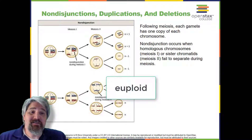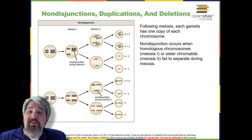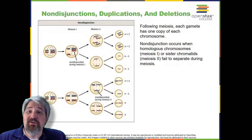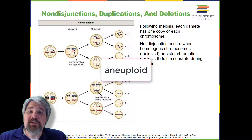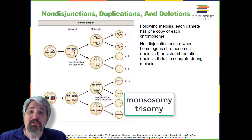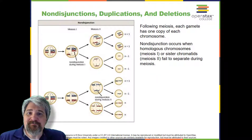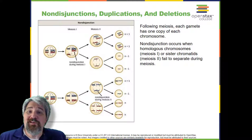An individual with the appropriate number of chromosomes for their species is called euploid. In humans, euploidy corresponds to 22 pairs of autosomes and 1 pair of sex chromosomes. An individual with an error in chromosome number is described as aneuploid, a term that includes monosomy — the loss of one chromosome — or trisomy, the gain of an extraneous chromosome. Monosomic human zygotes missing any one copy of an autosome invariably fail to develop to birth because they have only one copy of essential genes.